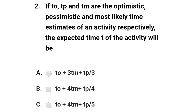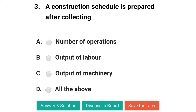The first question: if t0, tp and tm are the optimistic, pessimistic and most likely time estimates of an activity respectively, the expected time t of the activity will be — option A: t0 + 3tm + tp divided by 3; option B: t0 + 4tm + tp divided by 4; option C: t0 + 4tm + tp divided by 5; option D: t0 + 4tm + tp divided by 6. The correct answer is option D: t0 + 4tm + tp divided by 6.